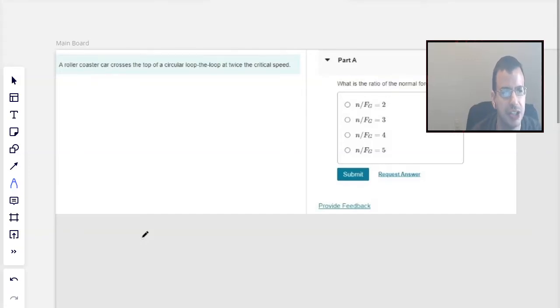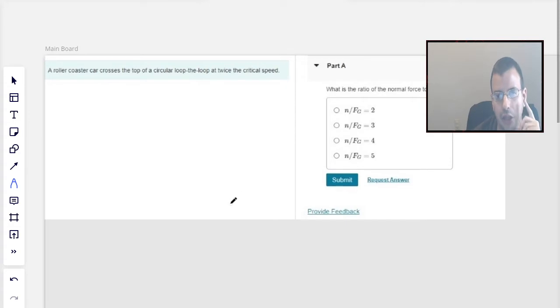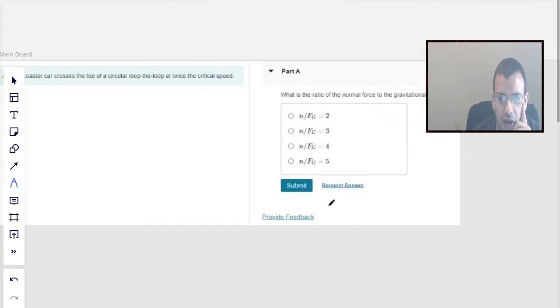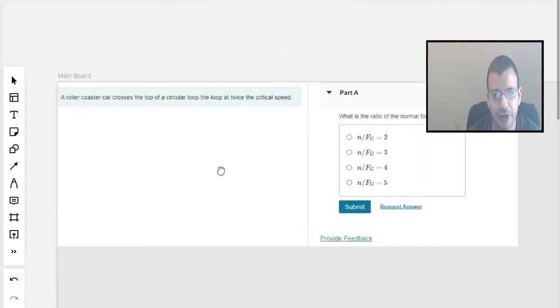A roller coaster car crosses the top of a circular loop-de-loop at twice the critical speed. What is the ratio of the normal force to the gravitational force?